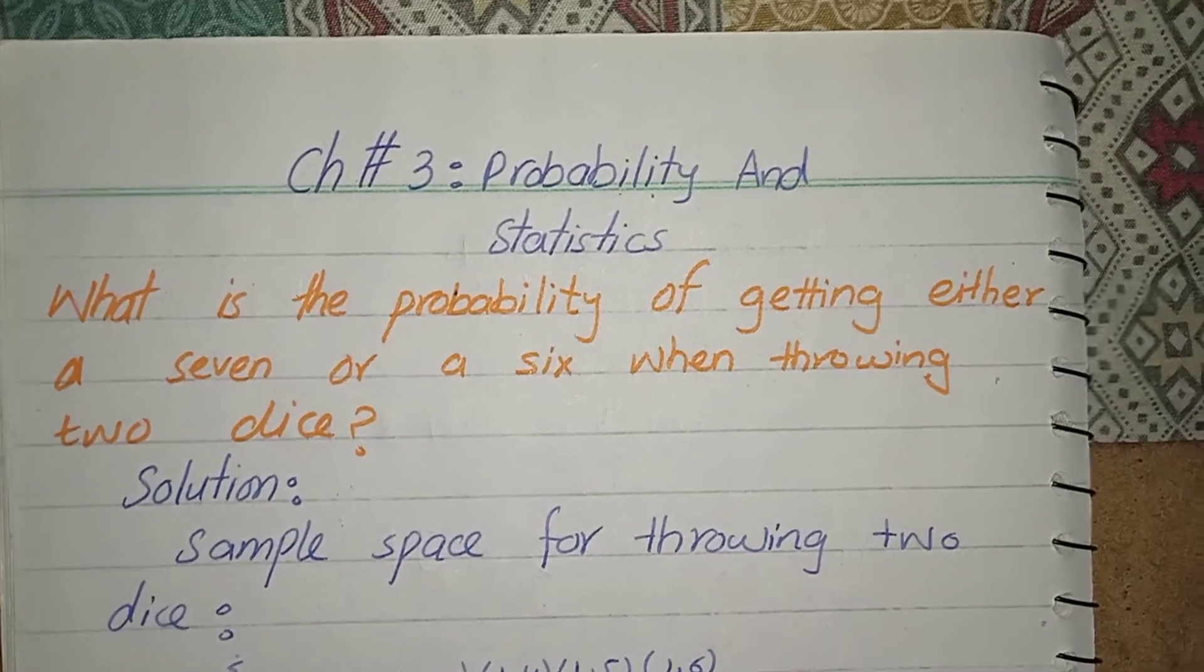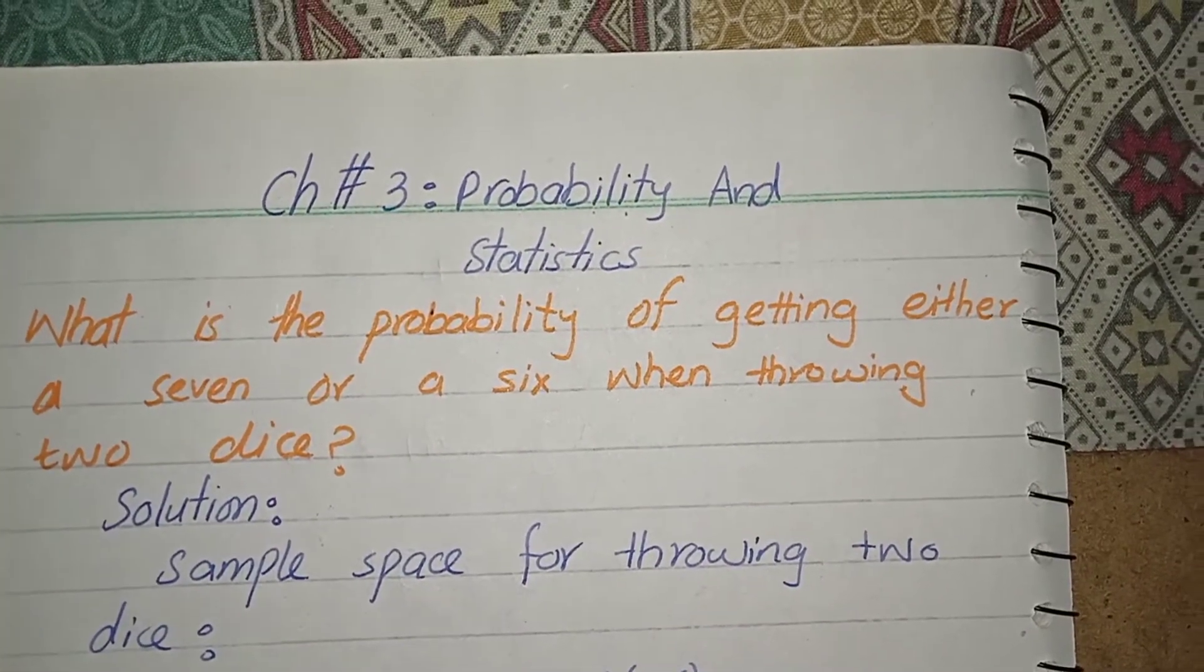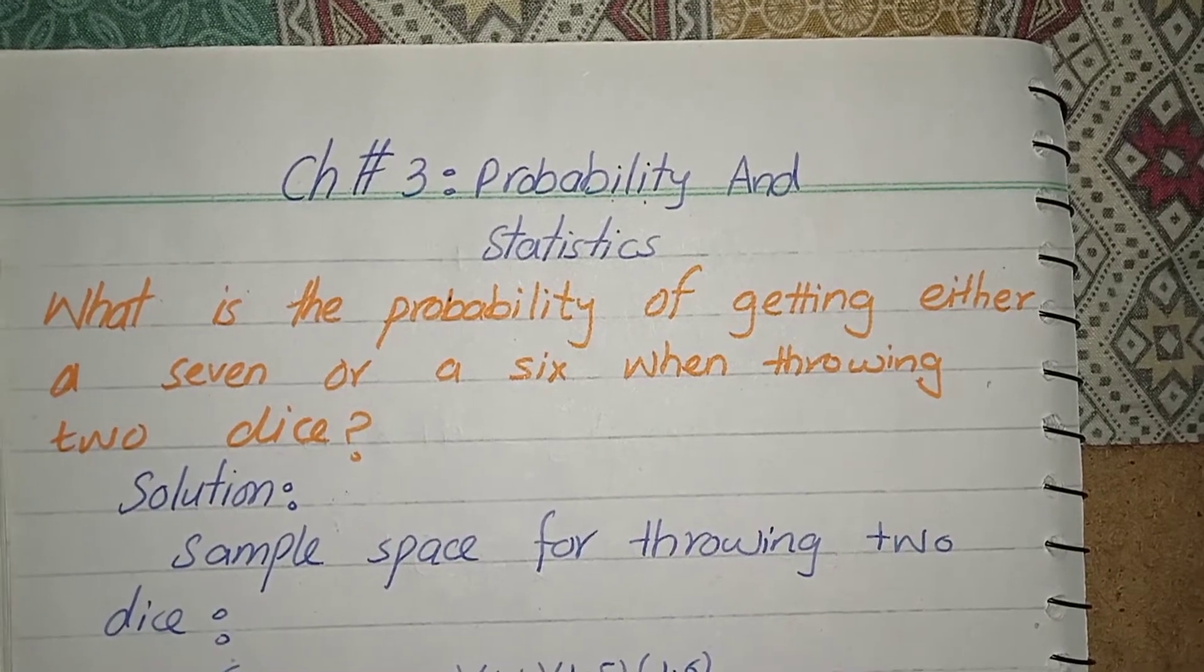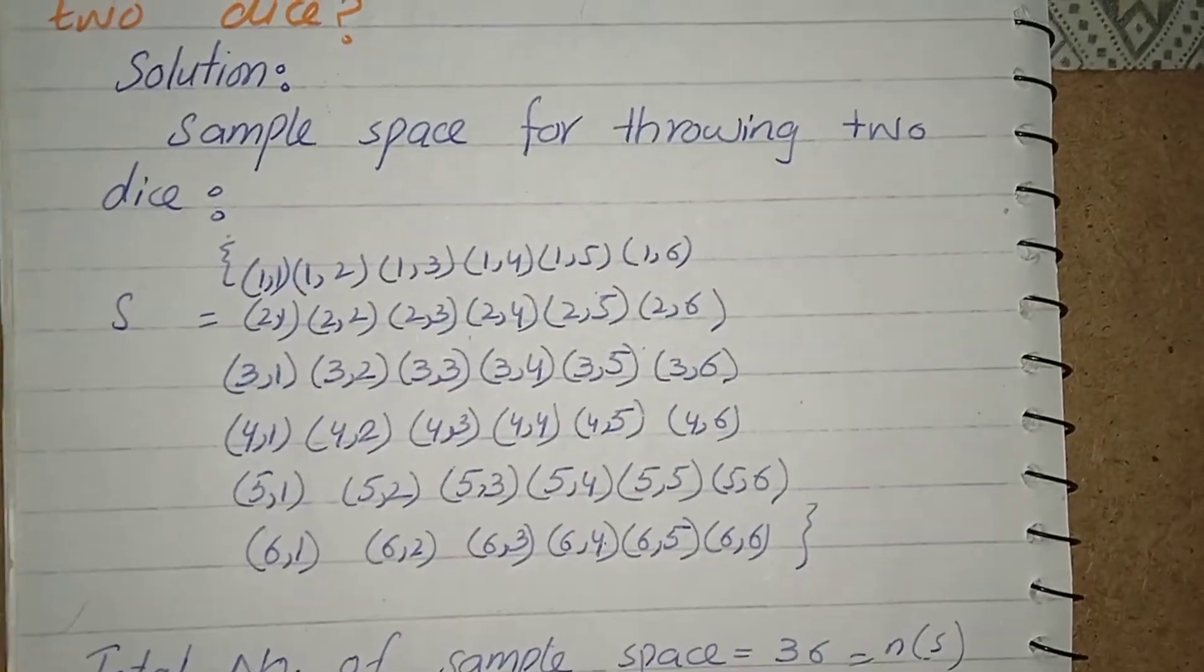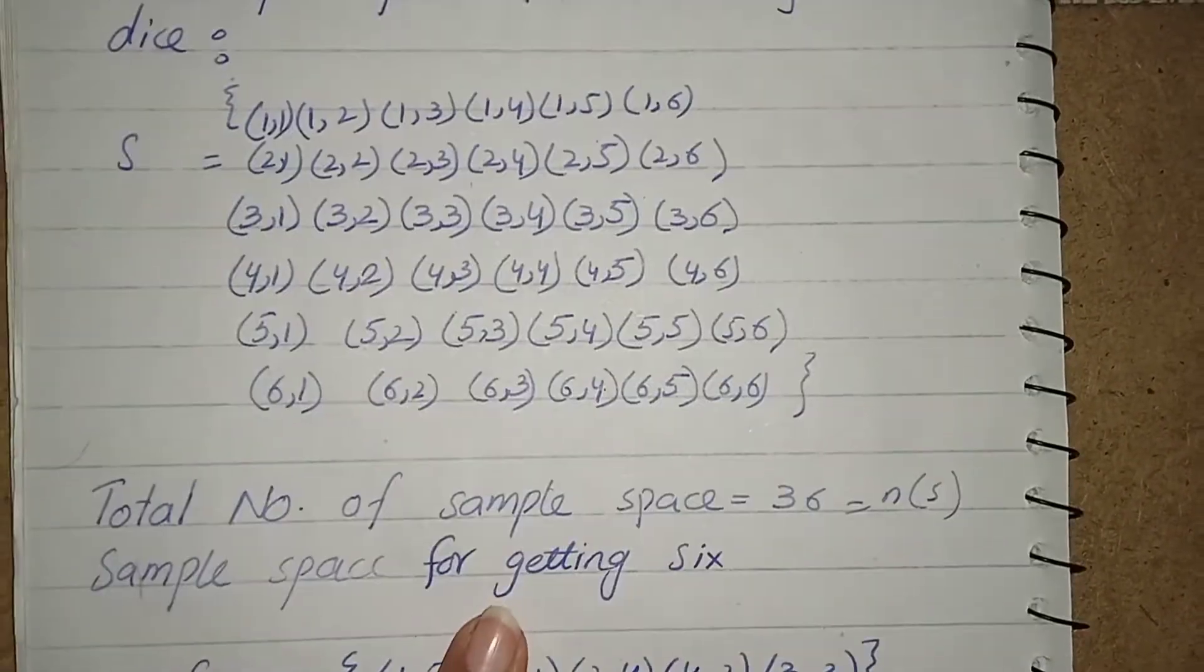This is the first question: what is the probability of getting either a 7 or a 6 when throwing two dice? Before getting into the solution, at first I made the sample space for all the possibilities and the number of sample space is 36.